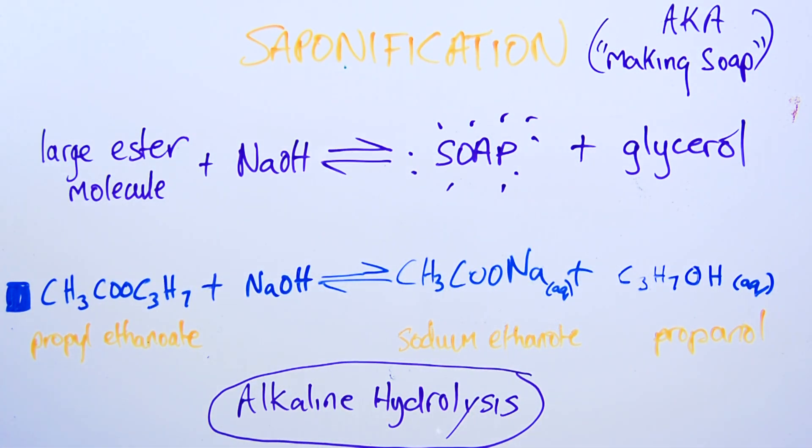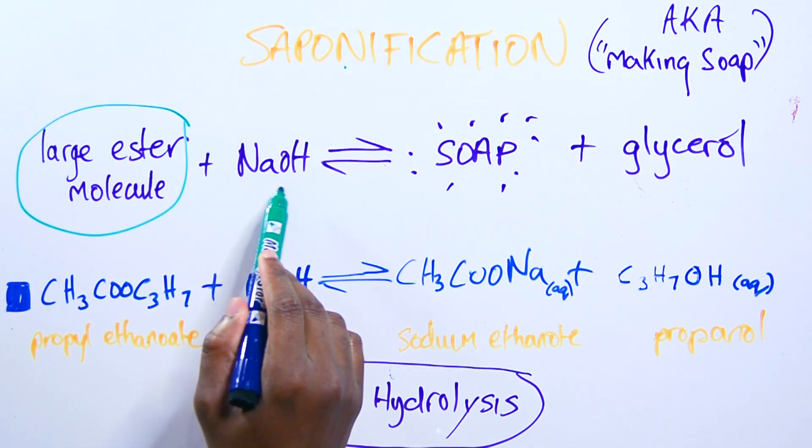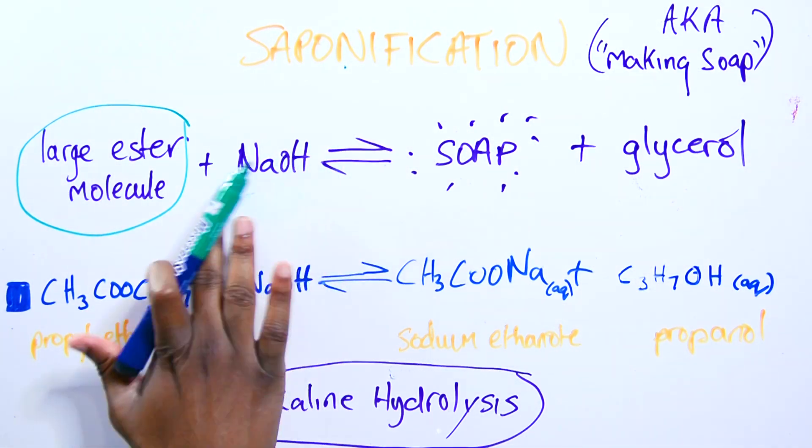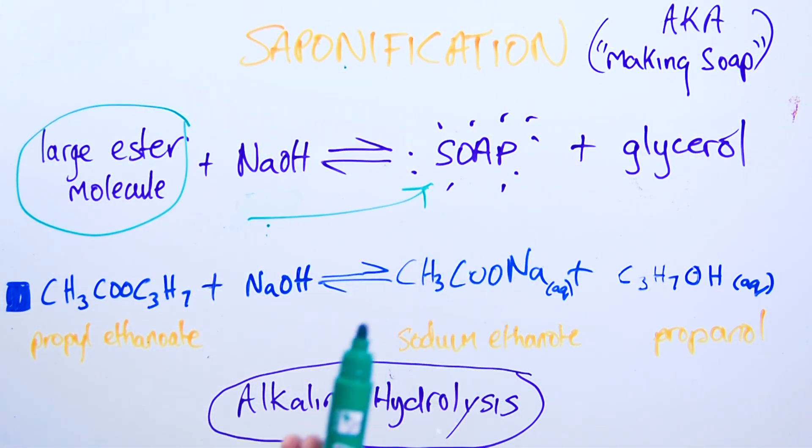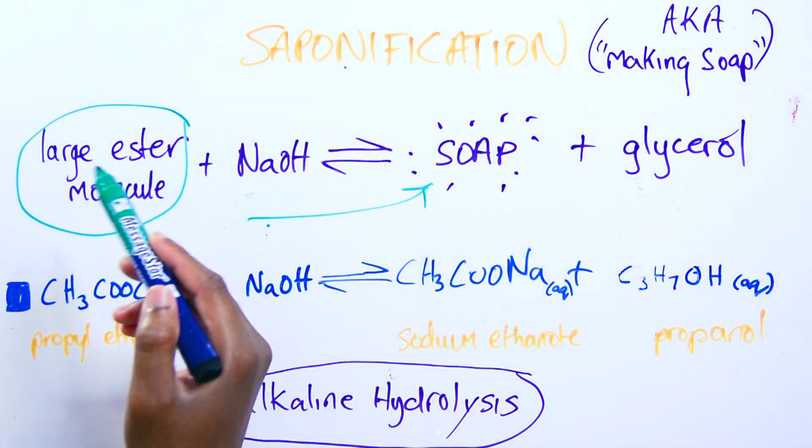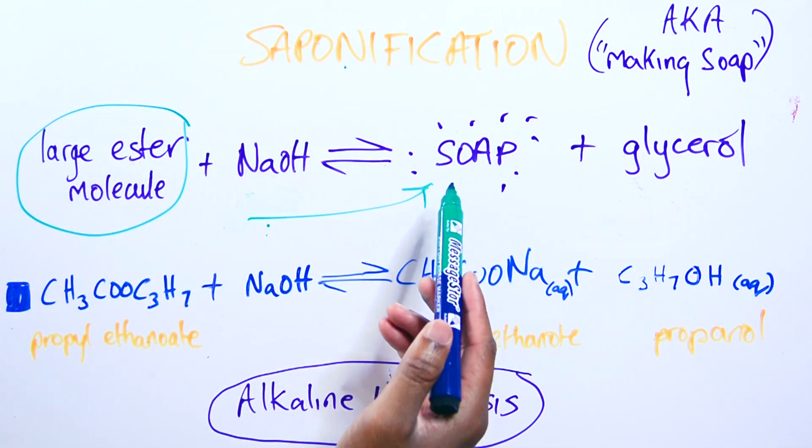So a large ester molecule, a really long one. Long chain ester molecule is going to join up with the sodium hydroxide. Or it could be potassium hydroxide as well. And we are going to get soap. Which is basically a salt of the acid that made this ester.